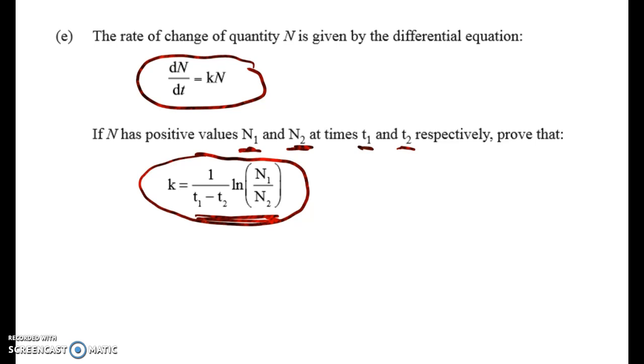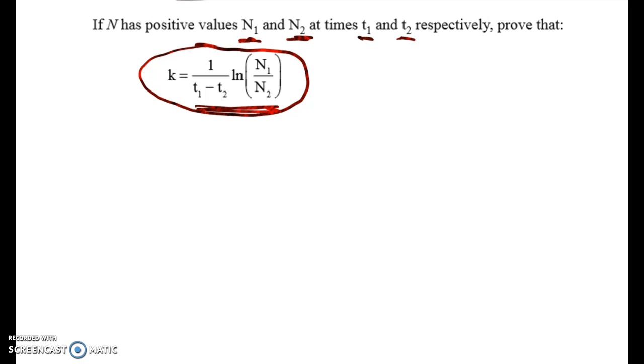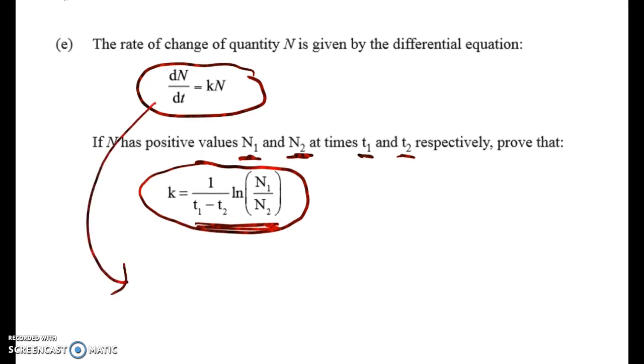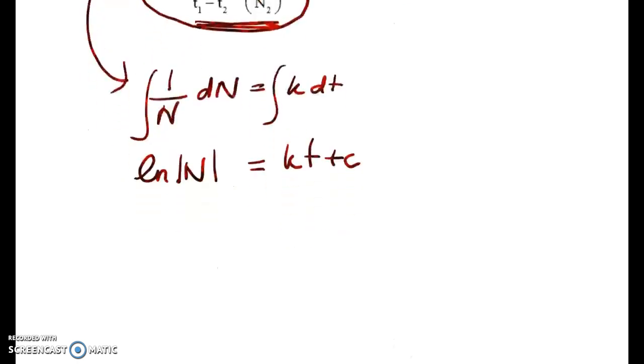Okay, so the first thing we're going to do is separate the variables. This is probably one of the easier excellence questions I've seen in the last few weeks. So working from here down, we get 1 over n dn is equal to k dt. I'm going to integrate both sides. That gives me the natural log of n here, and kt plus c over here.